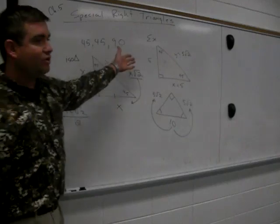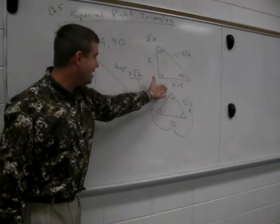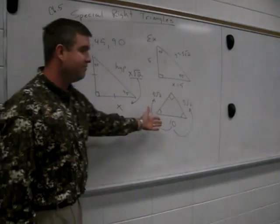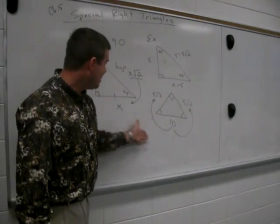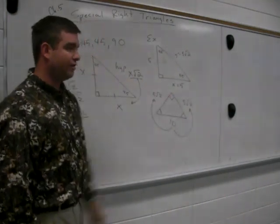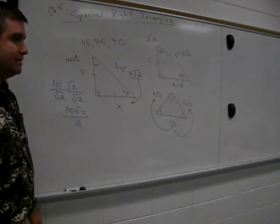So if they give you a leg, then you automatically know the other leg and you can figure out the hypotenuse. If they give you the hypotenuse, then you have to work backwards in order to find the legs. Does that make sense?